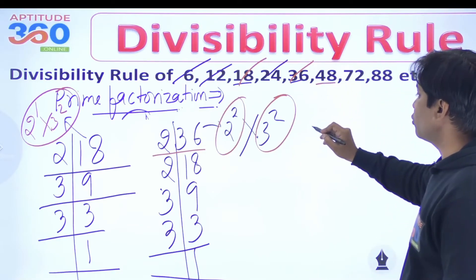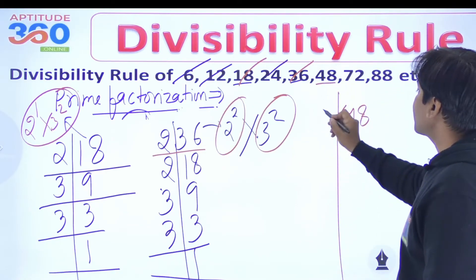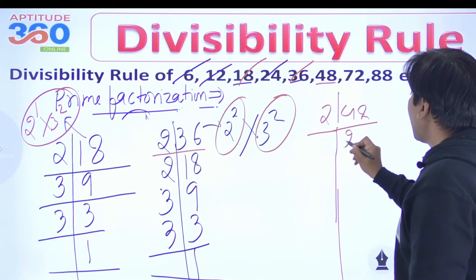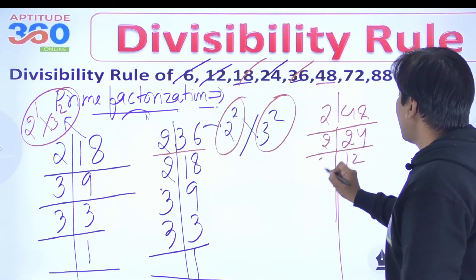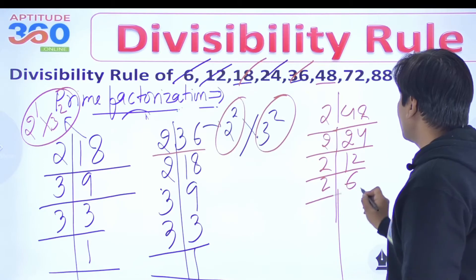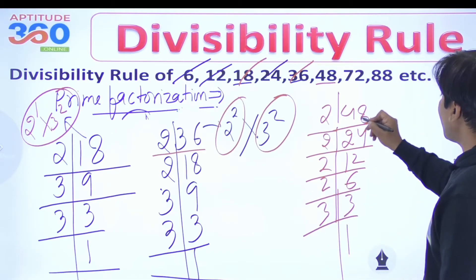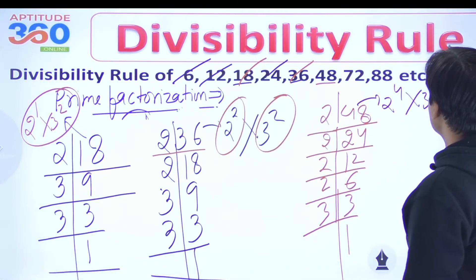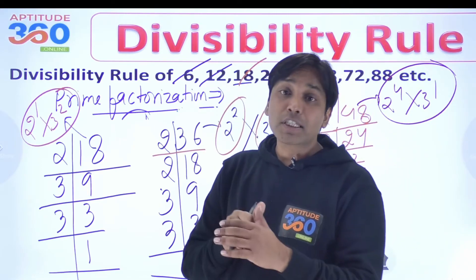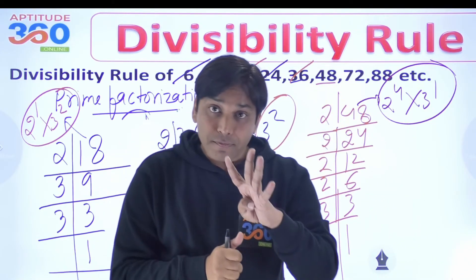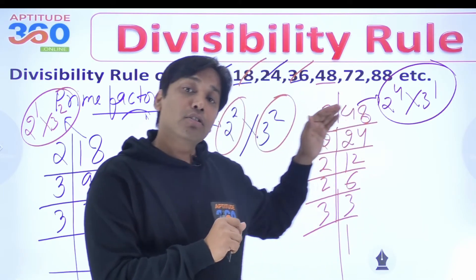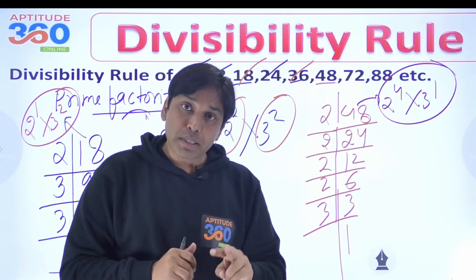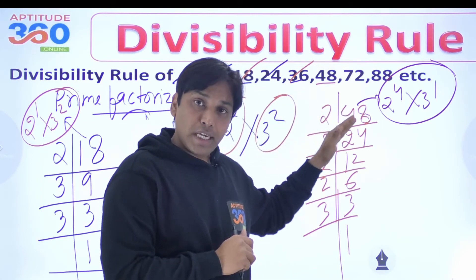How about 48? The prime factorization of 48 goes: 48 → 24 → 12 → 6 → 2 and 3. This comes out as 2 to the power 4 times 3 to the power 1. You understand the divisibility rule of 2 to the power 4, which is 16 — the last 4 digits must be divisible by 16. And the rule of 3 is the sum of digits must be divisible by 3. Any number that follows these two properties is necessarily divisible by 48.